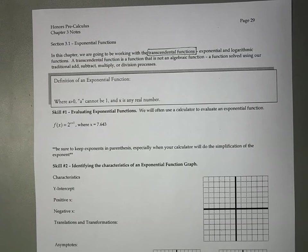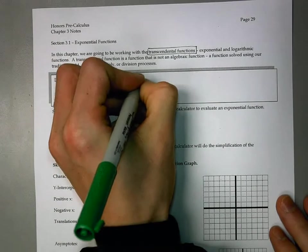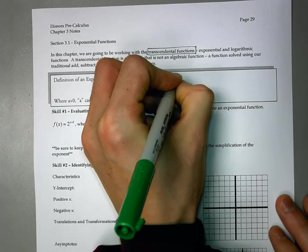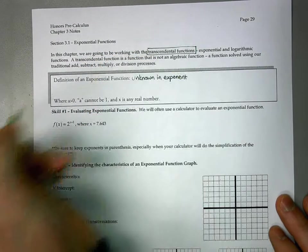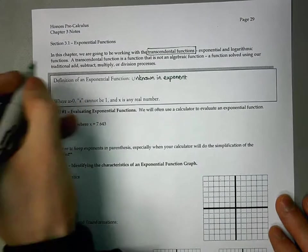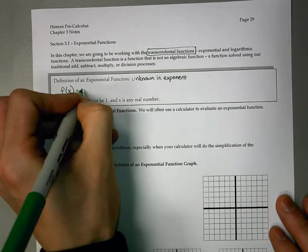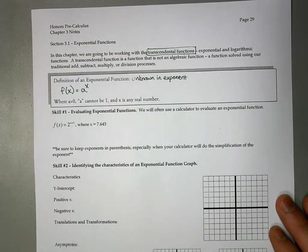We've got to use some other processes along the way, and that's really what we're going to be studying in this chapter. The first thing we're going to look at is an exponential function. An exponential function just has the unknown in the exponent.